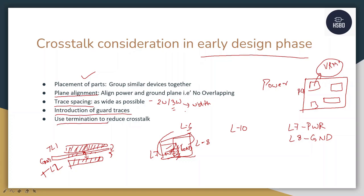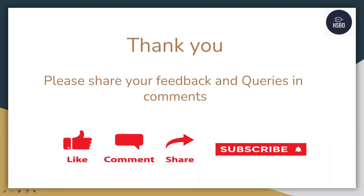The first and foremost thing to check in the early design phase, if you don't want crosstalk in your signal, is reducing reflection and introducing termination techniques — we have created a separate video for that in our series. Thank you for joining this short tutorial on crosstalk analysis. If you have any queries, comment down below. Please like and share the video — this will motivate us to give more content about high speed board design, signal integrity, and power integrity. Subscribe and press the bell icon so you never miss an update.